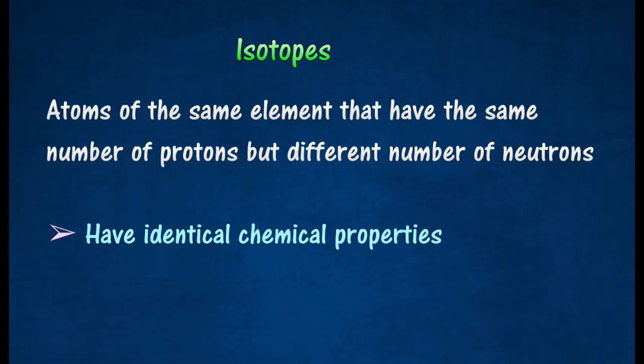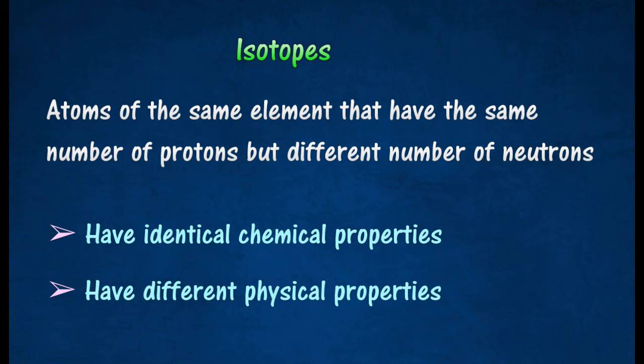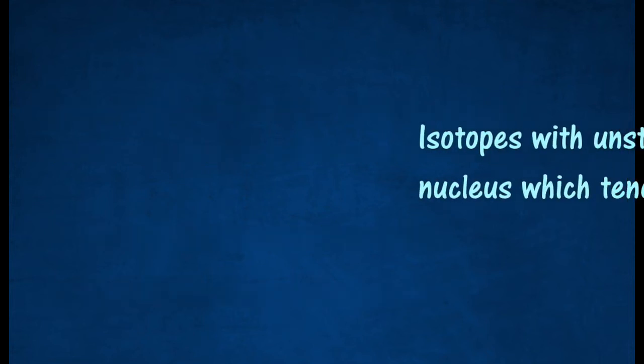Since they have the same number of protons and occupy the same place in the periodic table, the physical properties of each isotope of a particular element are different as each isotope has a different number of nucleons. The isotopes with unstable nucleus which tend to decay are called radioisotopes.